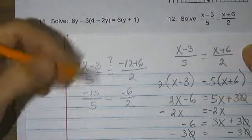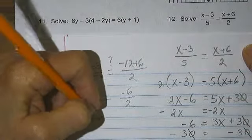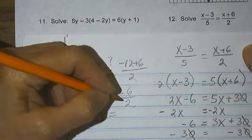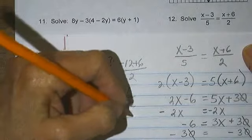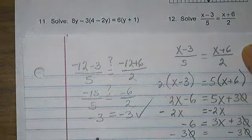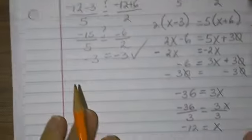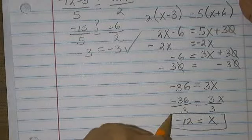Negative 15 divided by 5 is negative 3. Negative 6 divided by 2 is negative 3. Negative 3 is equal to negative 3, so this is correct and I can prove it.